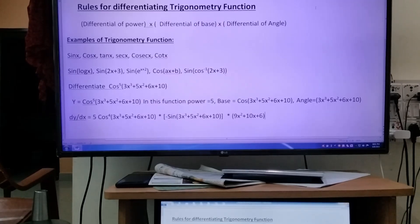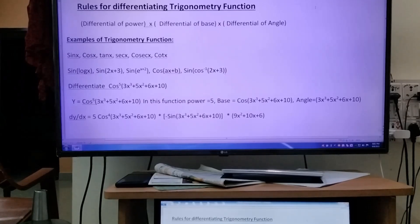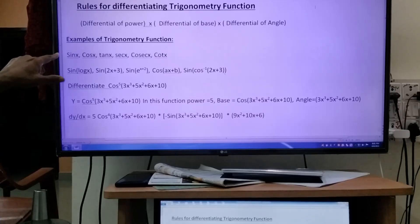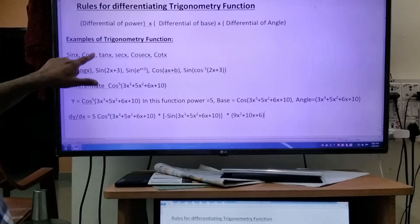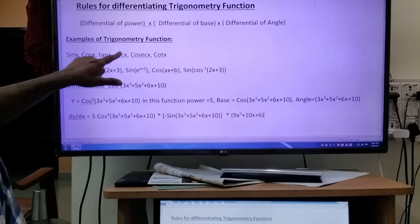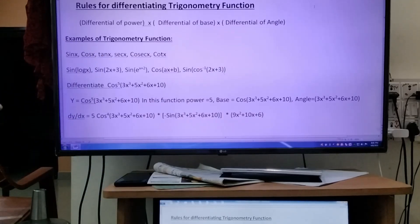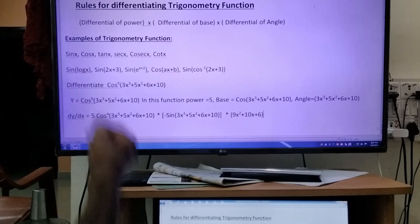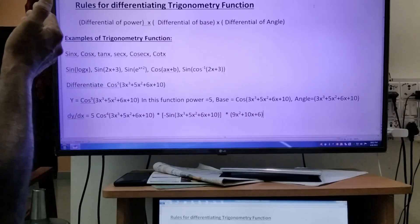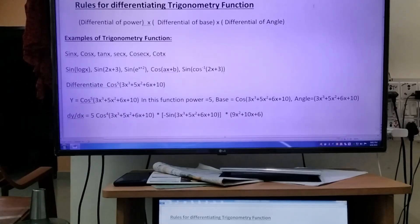You should know some examples of differential trigonometry functions. You see sin x, cos x, tan x, secant x, cosecant x, cot x - all are seen with the ratio sin, cos, tan, secant, cosecant. That's why it's called a trigonometry function.